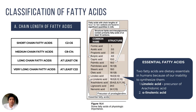We further classify fatty acids based on their length. Short chain fatty acids can have a length of up to 6 carbons. Medium chain fatty acids have a length of up to about 14 carbons. Long chain fatty acids can be 16 carbons or more, and very long chain fatty acids have a length of at least 22 carbons. This table shows the different names of fatty acids relative to their carbon length. Important long chain fatty acids include palmitic acid, which is the main storage form. Linoleic acid and alpha-linolenic acid are essential fatty acids, meaning the body cannot make them and we must obtain them from the diet.